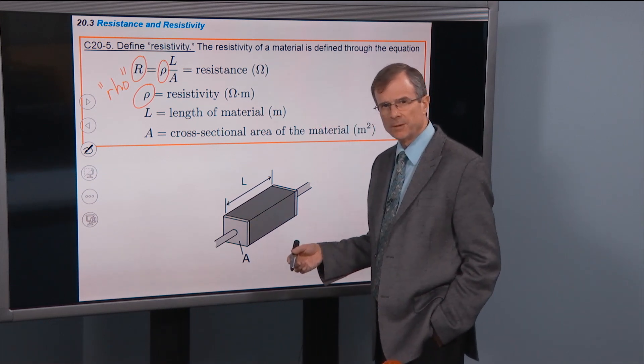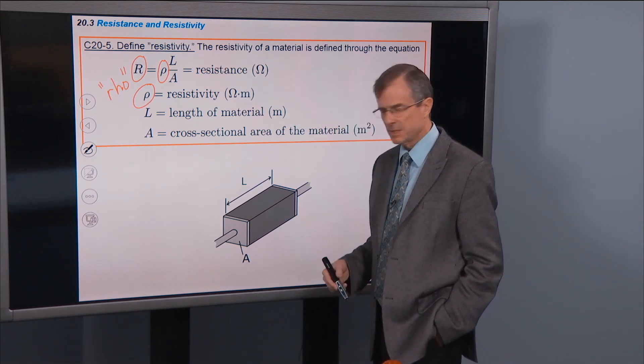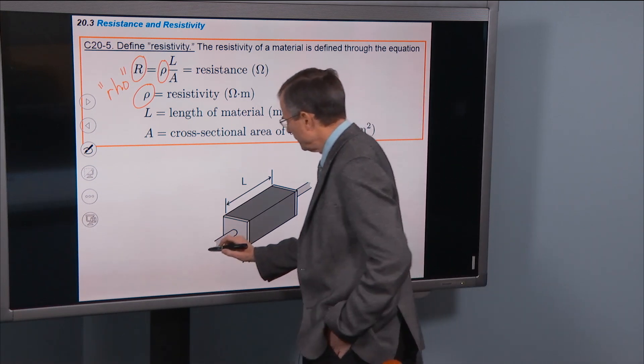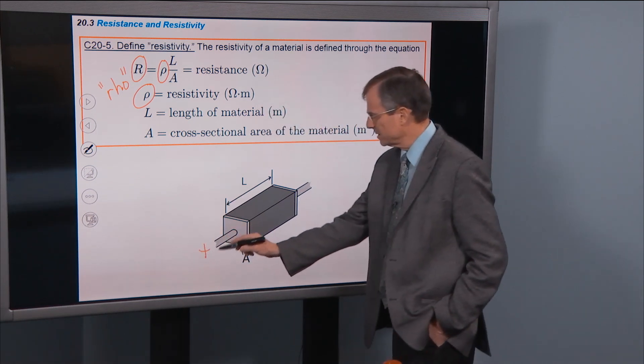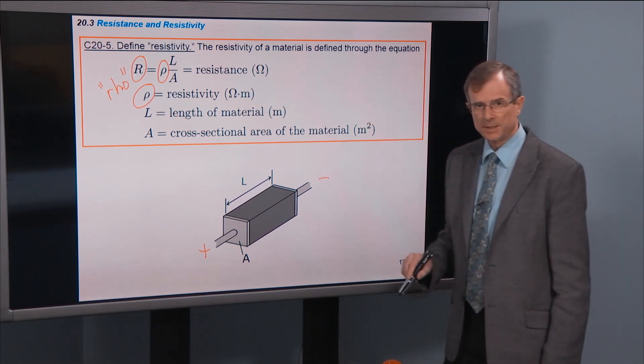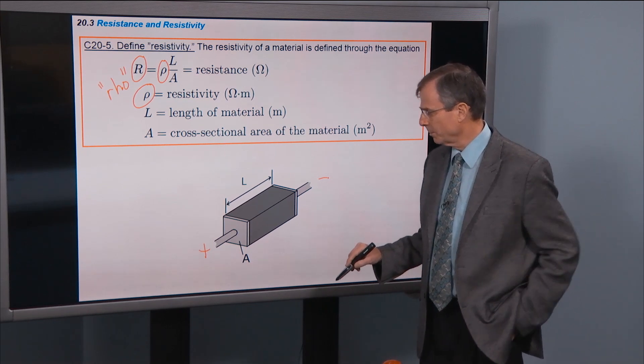...then what's important in determining that resistance is the amount of material you have. So you might be attaching this wire to the positive side of a terminal, the positive terminal of a battery and this side to a negative terminal of a battery.